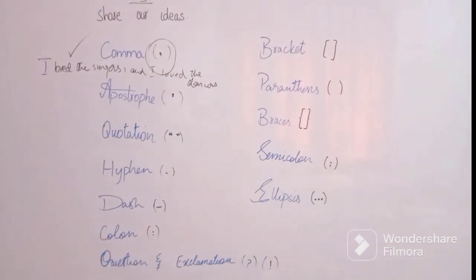I loved the singers and I loved the dancers. So here you can see how I used a comma. These are two clauses. I separated them or I joined them together. I loved the dancers as well, I enjoyed the singers as well, so I joined both clauses using comma.